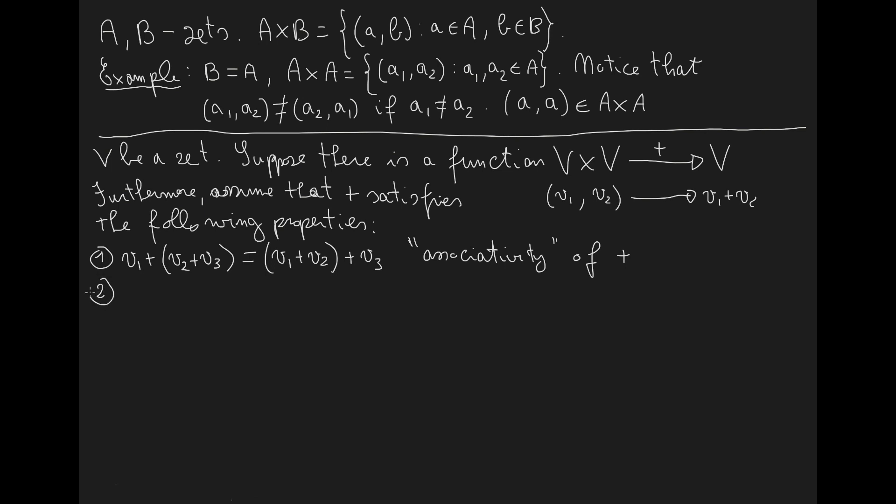Property number two is the following: there exists an element which we'll call zero in V with the following property. If I sum zero on the left to any element V, this sum will be equal to V.